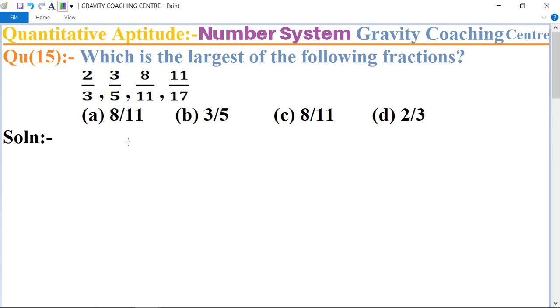We will find the largest one by shortcut method. First compare the first two fractions: 2 by 3 and 3 by 5. First step is cross multiplication.